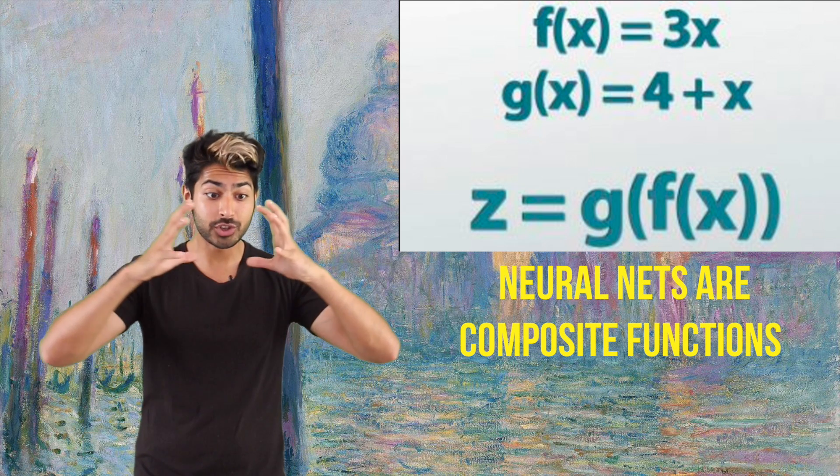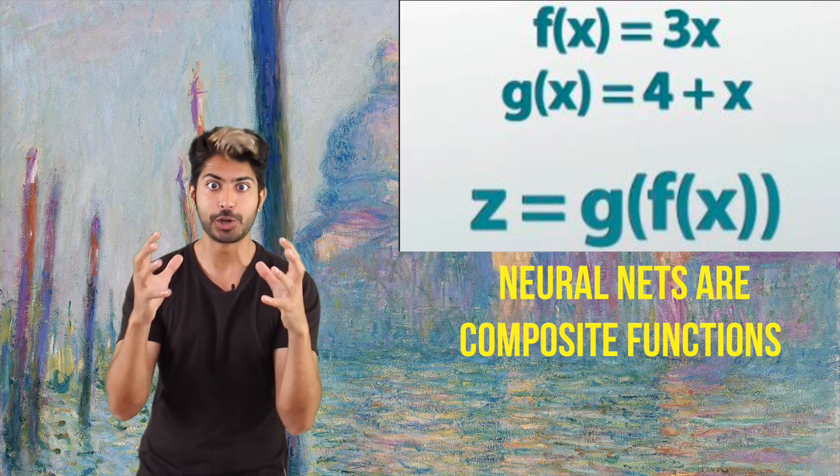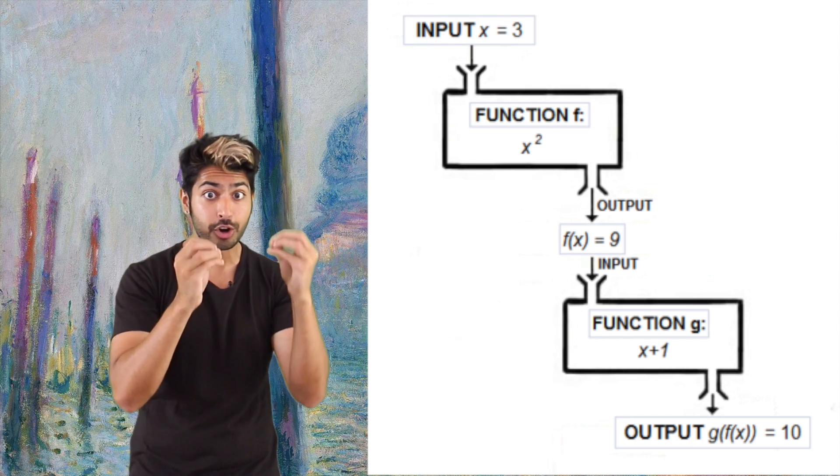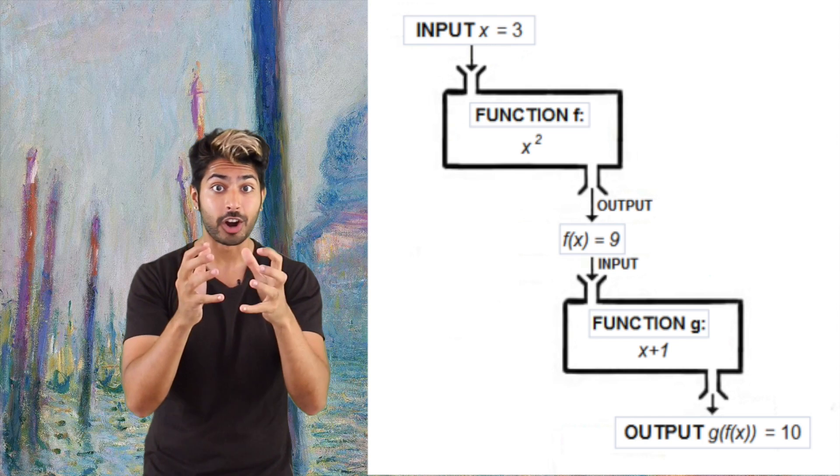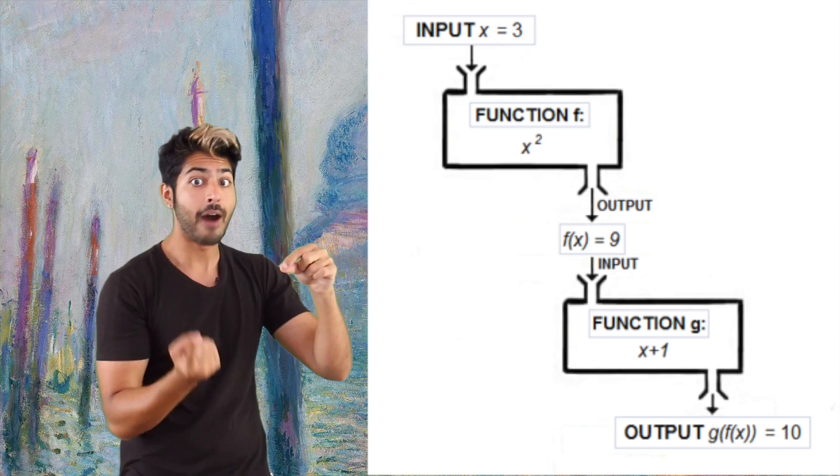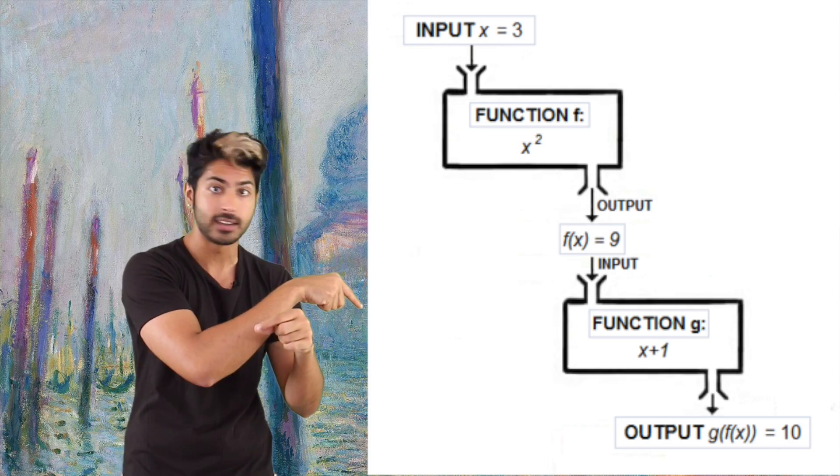A neural network is really just one big composite function. That means it's a function that consists of other functions. Each layer is just a function that takes as its input the result of the previous function's output. That's it.